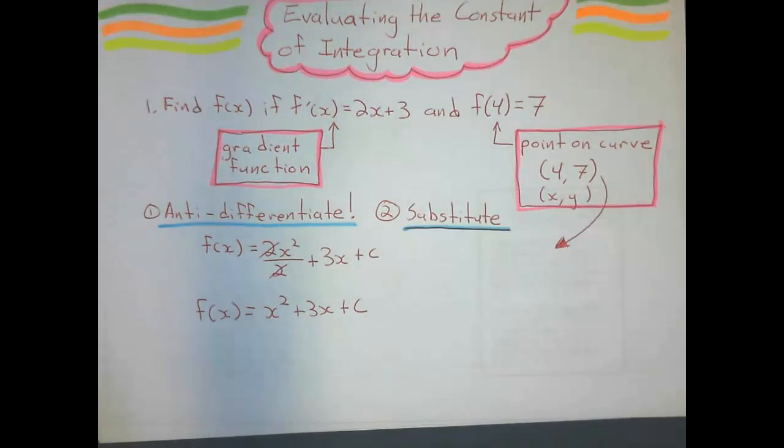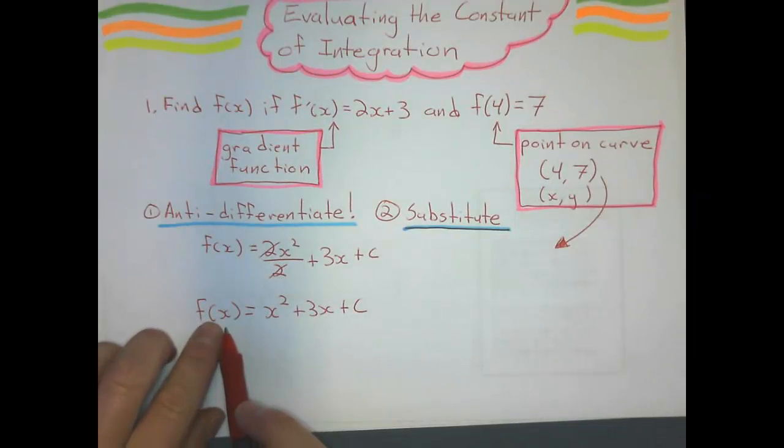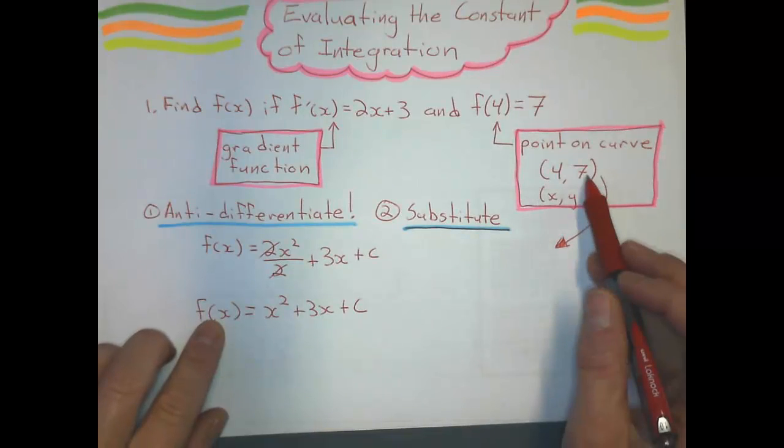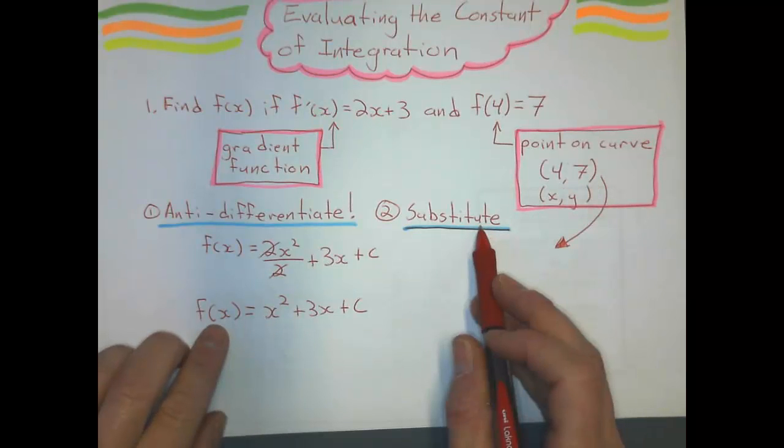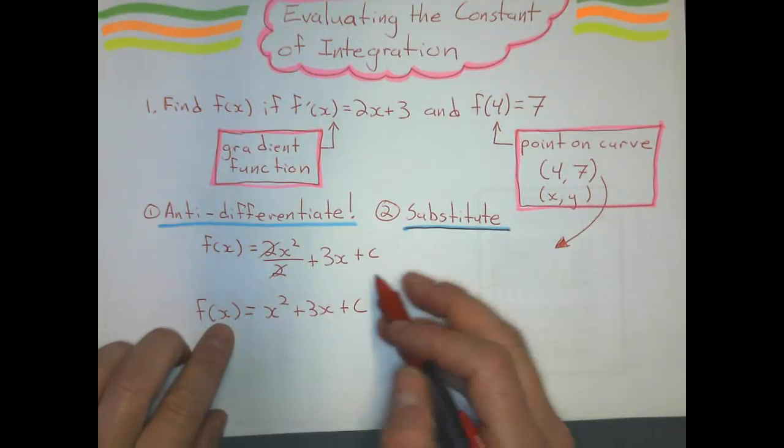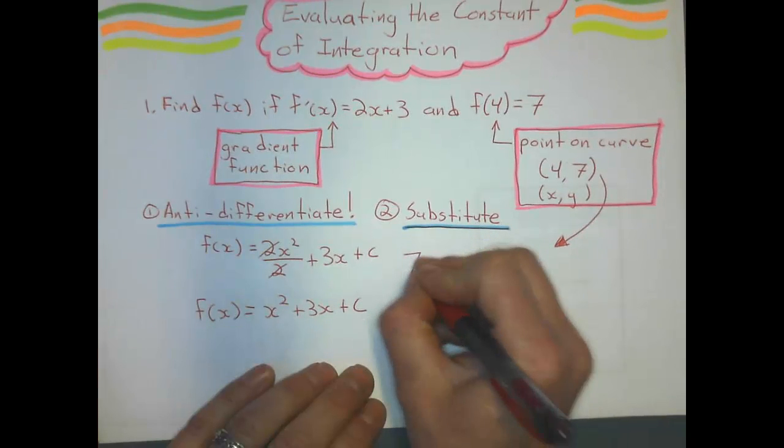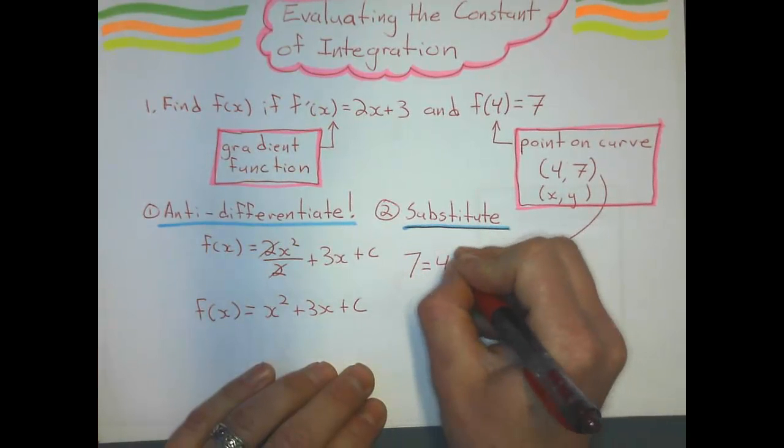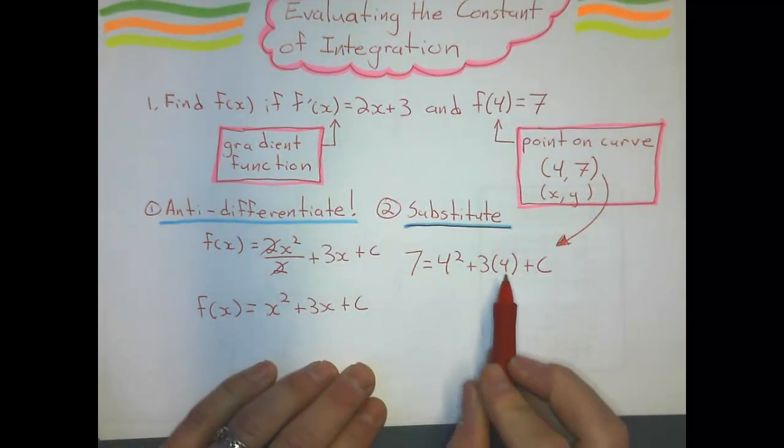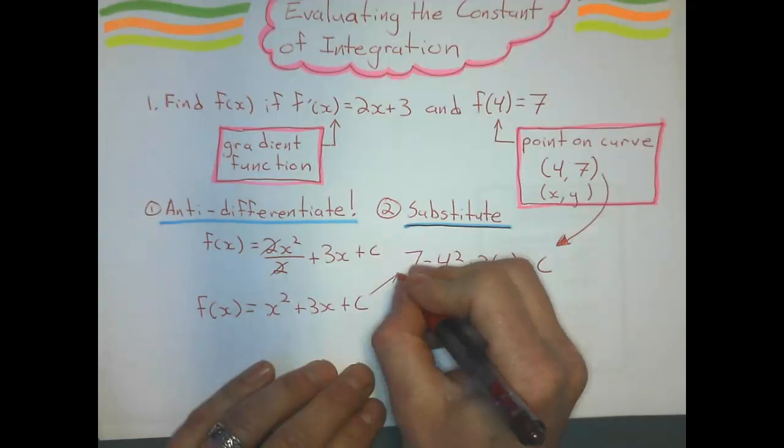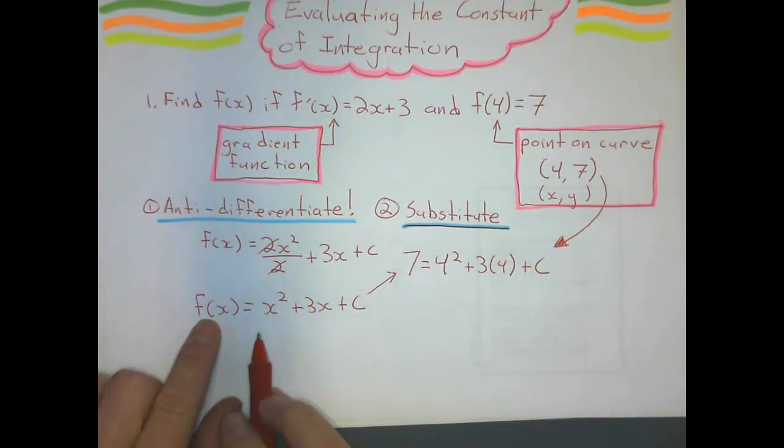Now, the only tricky thing about this one is that f(x) is the same as y. So when you see that f(x) right there, it's going to be 7 and x is just going to be 4. When we substitute, we're substituting it into the original equation and we're saying 7 = 4²+3(4)+c. I just took this equation and used 7 for f(x) and 4 for x.